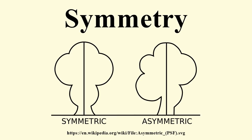Although these two meanings of symmetry can sometimes be told apart, they are related, so they are here discussed together. Mathematical symmetry may be observed with respect to the passage of time, as a spatial relationship, through geometric transformations such as scaling, reflection, and rotation, through other kinds of functional transformations, and as an aspect of abstract objects, theoretic models, language, music, and even knowledge itself.